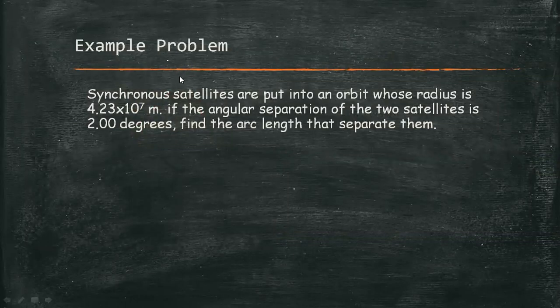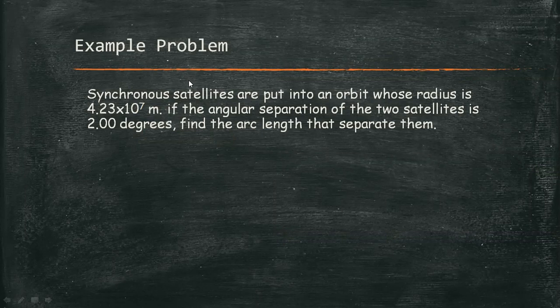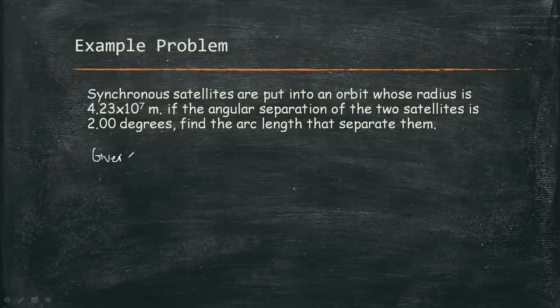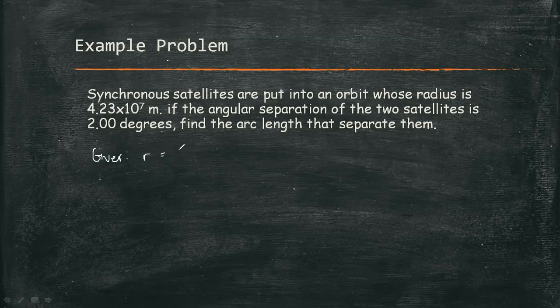Let's have an example. Synchronous satellites are put into an orbit whose radius is 4.23 times 10 to the 7 meters. If the angular separation of the two satellites is 2 degrees, find the arc length that separates them. Our given radius is 4.23 times 10 to the 7 meters, and theta is 2 degrees. We are looking for the arc length.